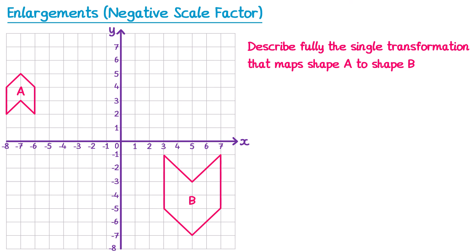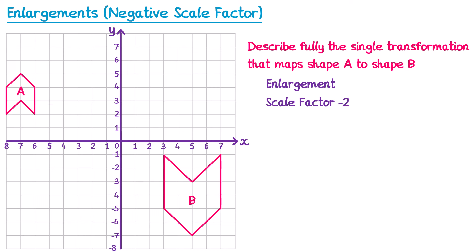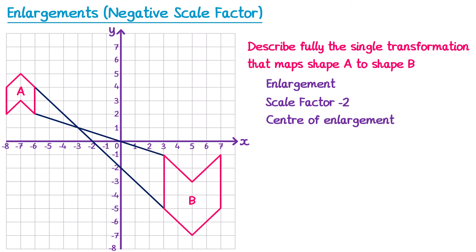For another example, it's an enlargement. Comparing corresponding lengths, 2 squares on shape A corresponds to 4 squares on shape B — so the shape doubled in size and was flipped, giving scale factor negative 2. Connecting corresponding points to find the centre of enlargement, they cross at (-3, 1).